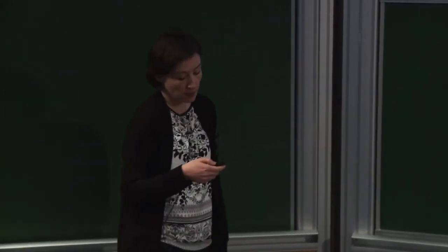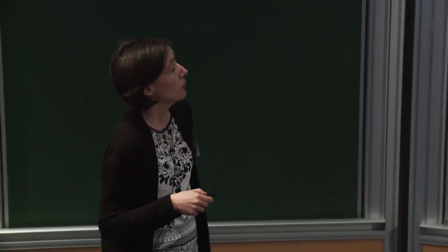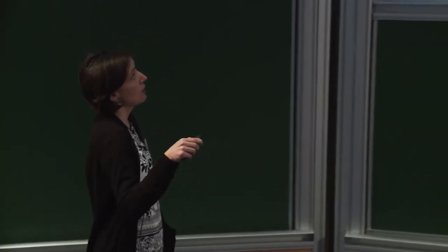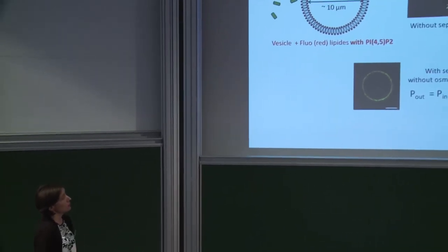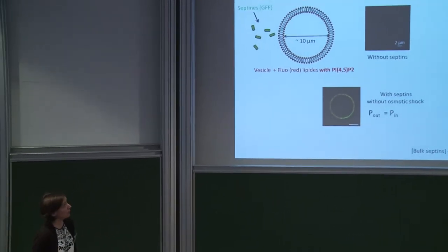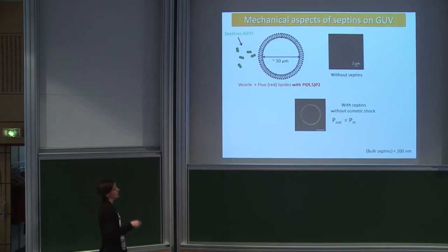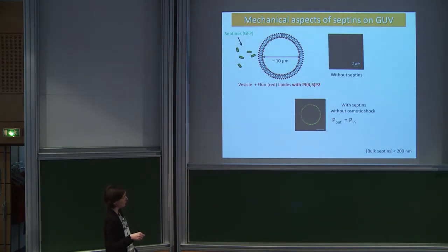We are working in vitro. What we are doing is we produce some giant unilamellar vesicles, which are vesicles with a lipid bilayer that we label in red. The size is typically tens of microns, and we incubate these vesicles with GFP-labeled septins, meaning green.